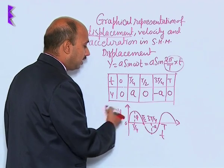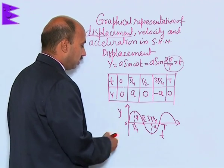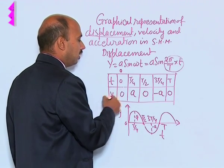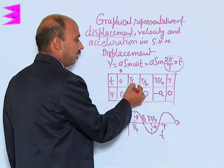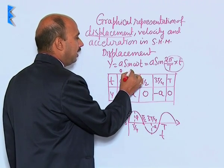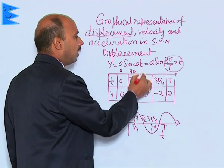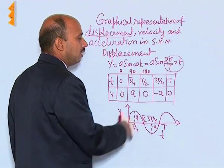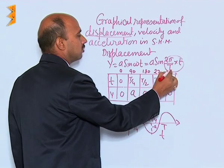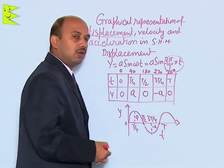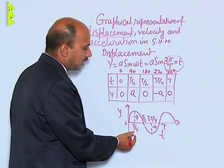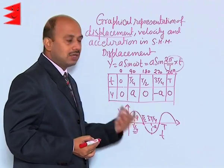But this you can write in terms of also the angles. 0 may be 0 degree and this is here 90 degree, this is 180 degree, this is 270 and this is 360 degree. So, in terms of angle also you can write. Corresponding to these time periods you can write angle in radian also.